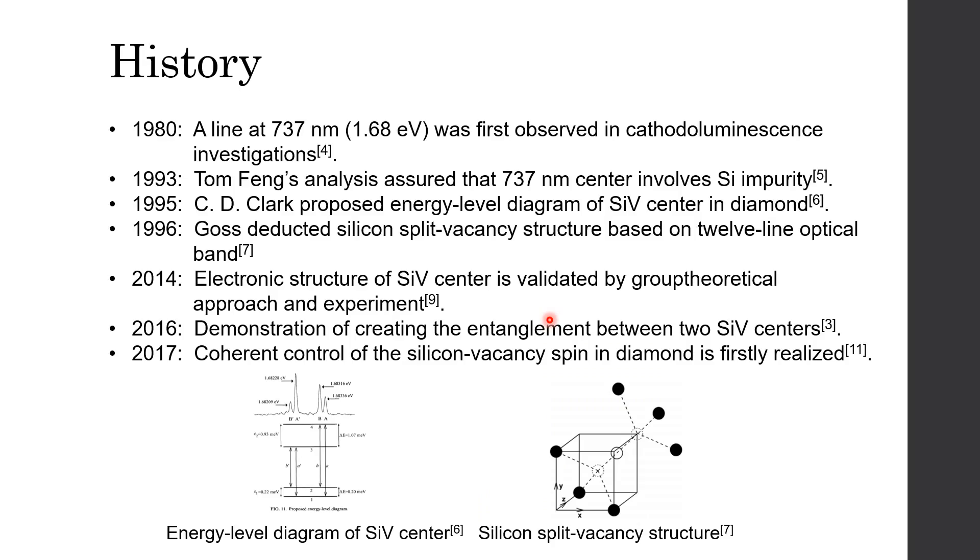In 1980, SiV center was first observed in CL investigation of diamond layers and polycrystalline film grown on silicon substrates. They observed a strong line at 737 nanometer. At that time, some of the researchers assumed this peak is due to GR1 neutral vacancy center, and others think that it was caused by silicon impurity.